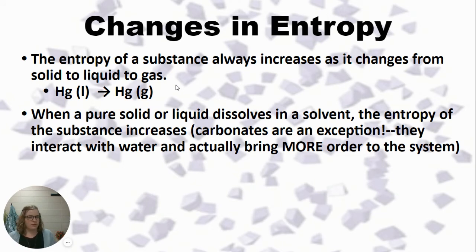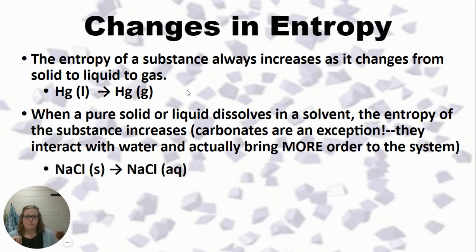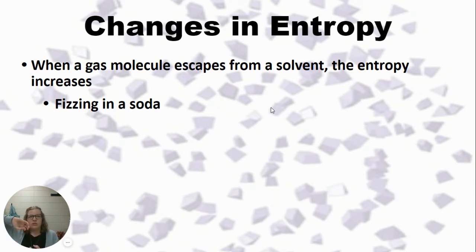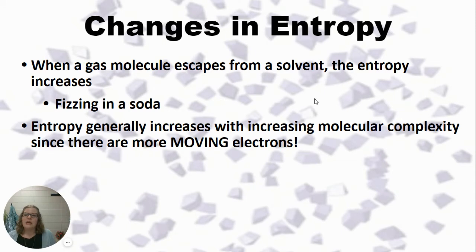One exception is carbonates — they like to interact with water and bring more order to the system, producing carbonic acid. But that's more of a fun fact. A classic example is salt dissolving in water: the ionic lattice of NaCl breaks apart and those particles spread over a bigger area — positive entropy change. Another example: gas escaping from a solvent. Think of a sealed soda with dissolved CO₂ — when you open it, the CO₂ comes out of solution and fizzes. That's an increase in entropy.